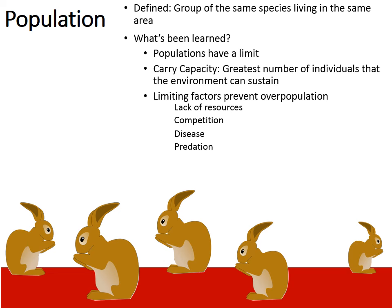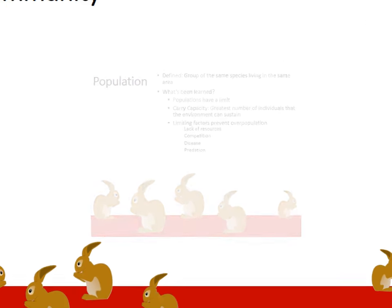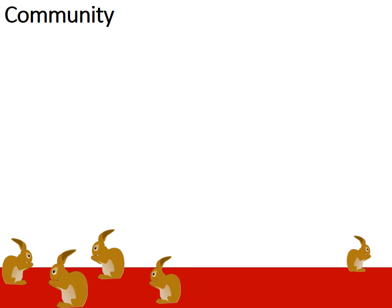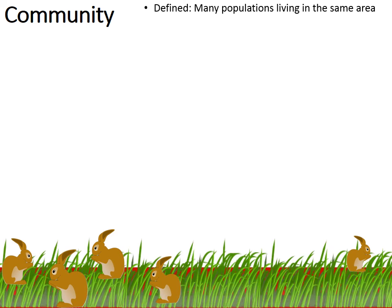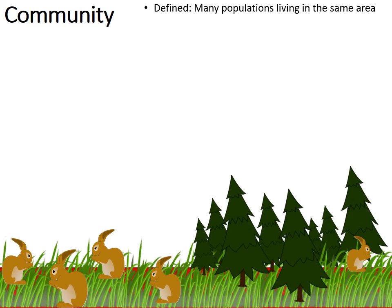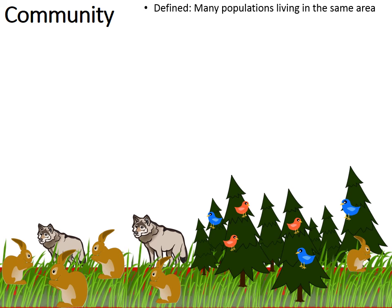Let's zoom out to the next level of ecological organization. When we zoom out we come to a level called the community, defined as an area where there are many populations living. So not just rabbits, but also plant life like grasses and trees, birds nesting in those trees, and lurking predators symbolized here by wolves. This is more realistic of a community.